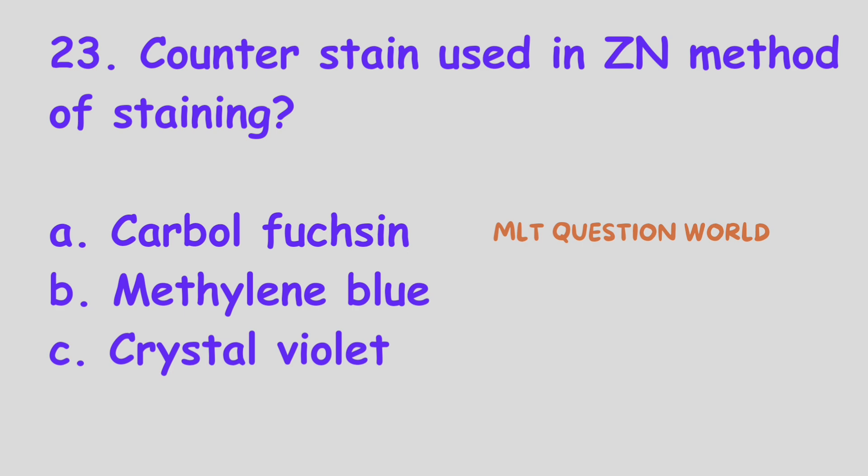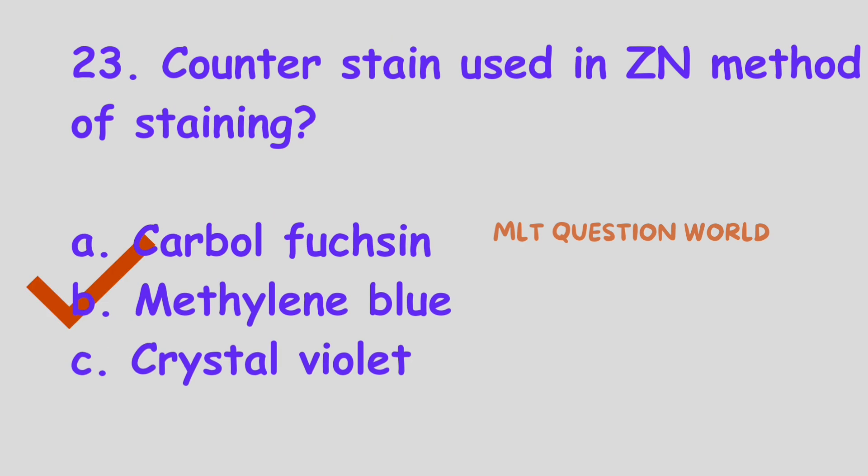Question number 23. Counter stain used in Ziehl-Neelsen's method of staining: Option A, Carbol fuchsin; Option B, Methylene blue; Option C, Crystal violet. Which of the following is used as a counter stain in Ziehl-Neelsen's method? The right answer is Option B, Methylene blue. Methylene blue is the counter stain used in the ZN staining method.